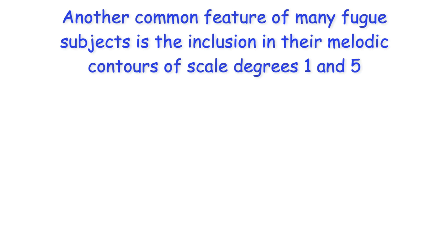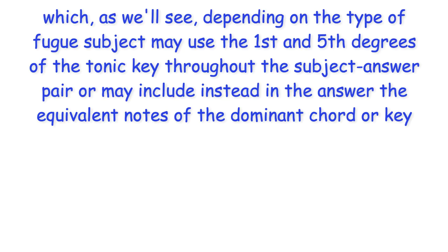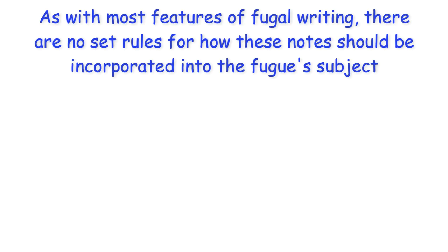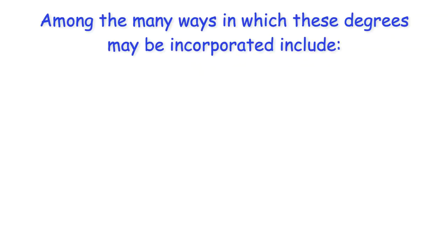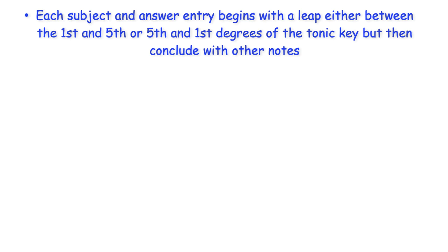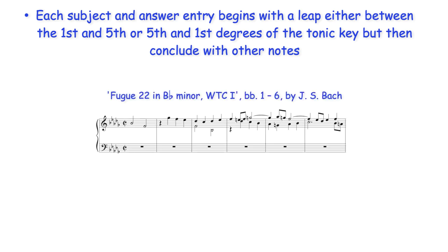Another common feature of many fugue subjects is the inclusion in their melodic contours of scale degrees 1 and 5, which, depending on the type of fugue subject, may use the first and fifth degrees of the tonic key throughout the subject-answer pair, or may include instead in the answer the equivalent notes of the dominant chord or key. As with most features of fugal writing, there are no set rules for how these notes should be incorporated. Among the many ways they may be incorporated: each subject and answer entry begins with a leap either between the first and fifth or fifth and first degrees of the tonic key, but then concludes with other notes. In this example, the subject concludes on the mediant and the answer on the flat seventh of Bb minor.